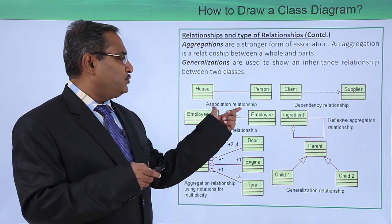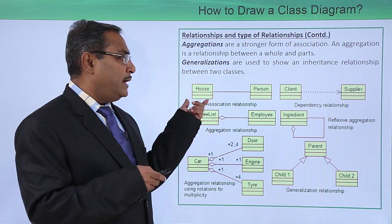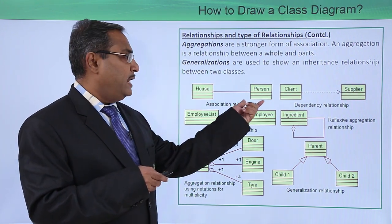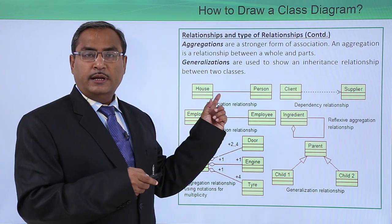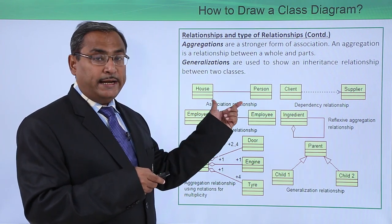So now here we are having this association relationship. So here we are having house and here we are having person. You see that no arrow is given. That means it is having the bi-directional relationship.